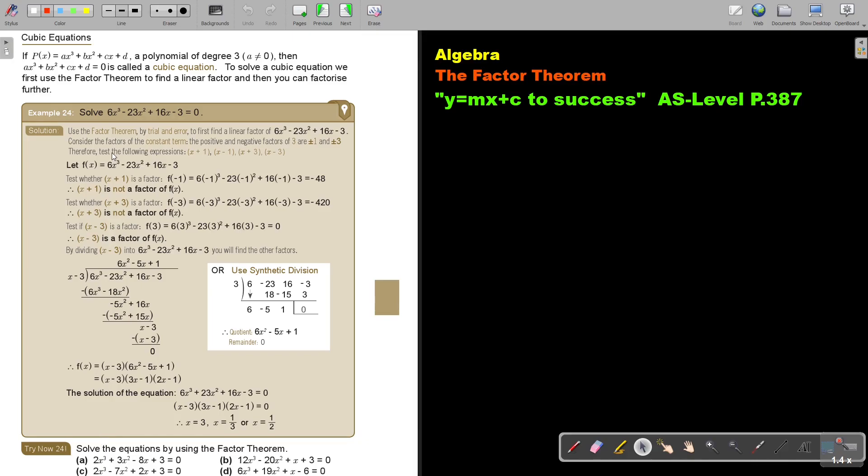Let's look at this example. Solve this. Use the factor theorem by trial and error to first find a linear factor, so just factorize first. Consider the factors of the constant term, the positive and the negative. So factors of 3 can be plus minus 1 or plus minus 3. Therefore, test the following: 1 positive, negative, 3 positive, negative.